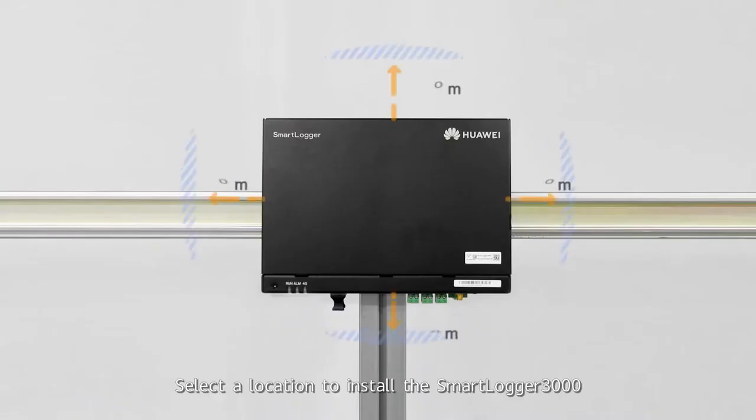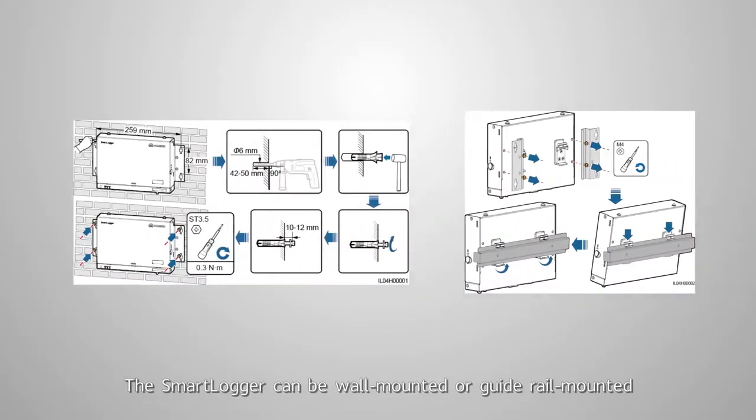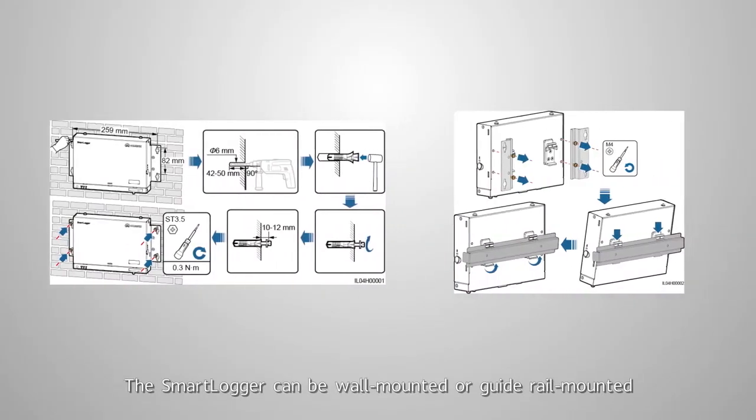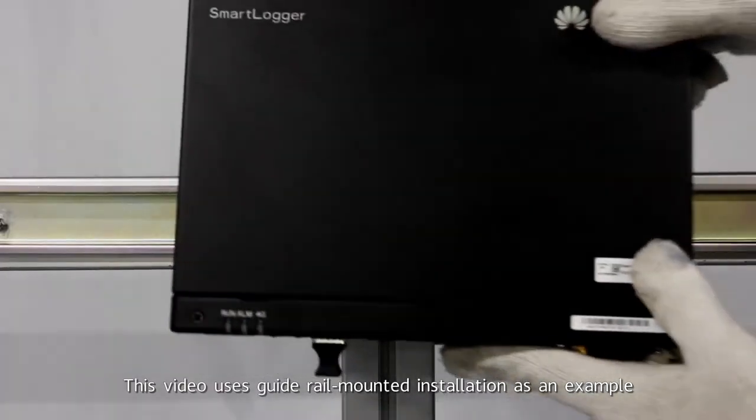Select a location to install the SmartLogger 3000. The SmartLogger can be wall-mounted or guide rail-mounted. This video uses guide rail-mounted installation as an example.